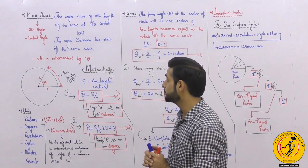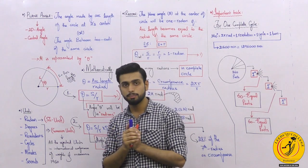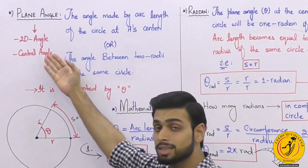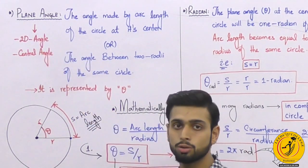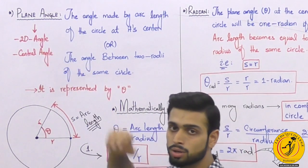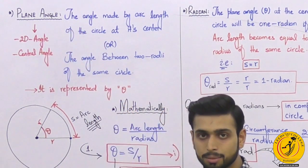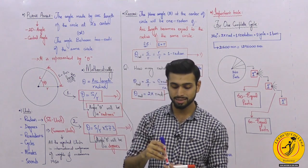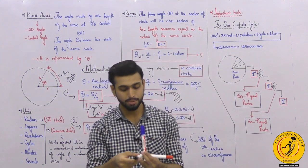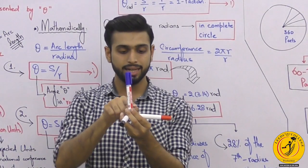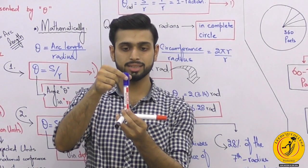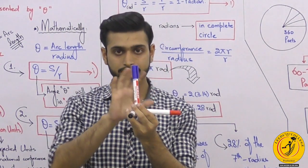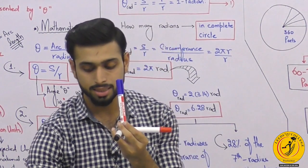So let's come to the topic. Plane Angle is also called Central Angle, and also called 2D Angle. Why is it called these names? There are specific reasons. To understand the reasons, we will discuss an example. This one is the X-axis, this one is the Y-axis, this one is the Z-axis — this is the Cartesian Coordinate System, also called the Rectangular Coordinate System.